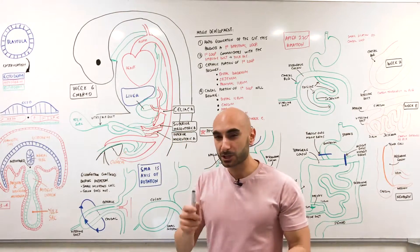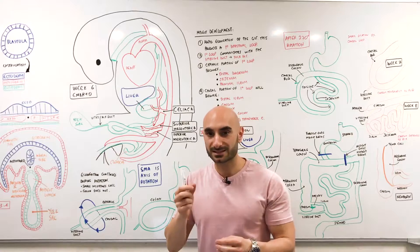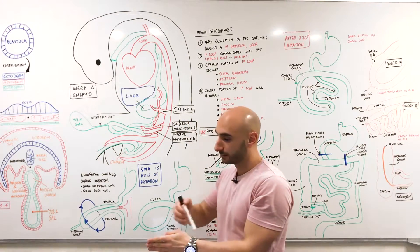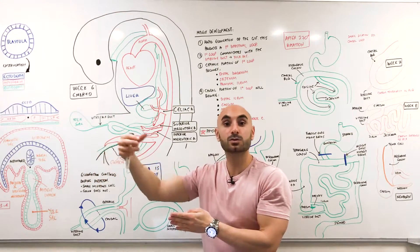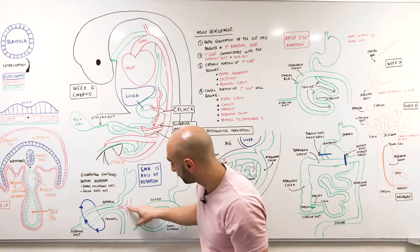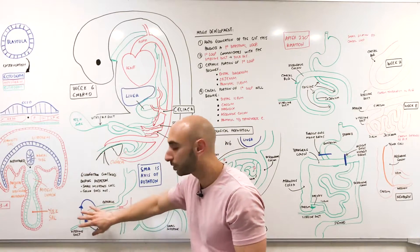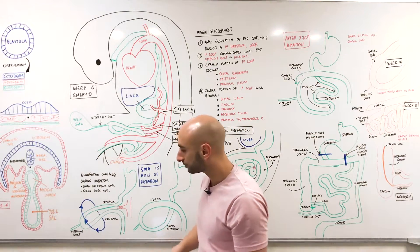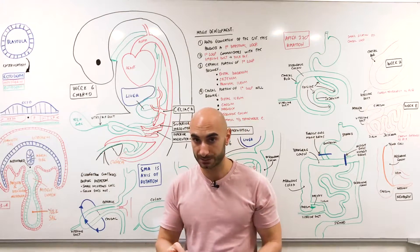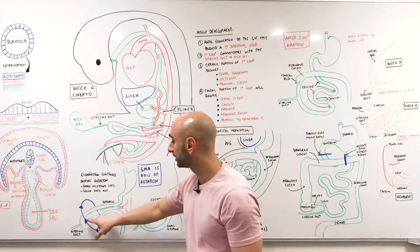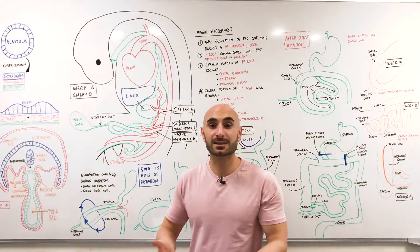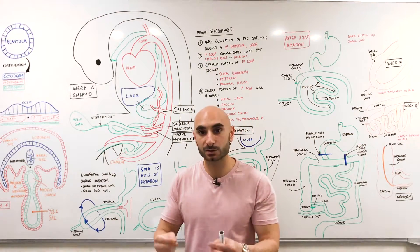The superior mesenteric artery is especially important for midgut development because it's its axis of rotation. If you have the superior mesenteric artery and then the loop of bowel, it'll rotate along the superior mesenteric artery. The midgut is made out of primary intestinal loops, and those loops have two portions. Above the vitelline duct is called the cephalic portion, and below is the caudal portion - essentially two limbs of the primary intestinal loops.